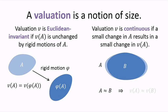That is, if I take set A and perturb it a little bit to get set B, then v of A is close to v of B. Continuity is usually stated more precisely with respect to the Hausdorff metric, but I don't have time to go into that here.